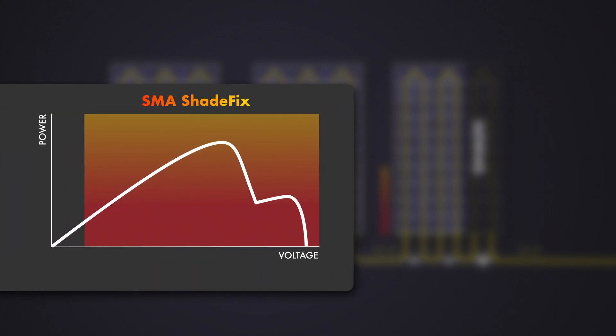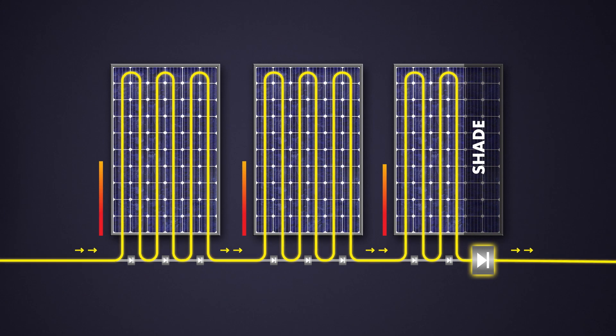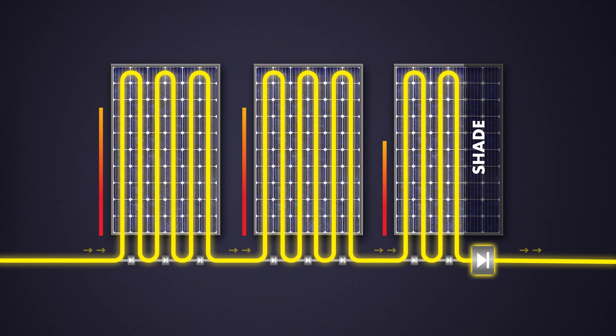Let's see what happens to the partially shaded PV array using SMA ShadeFix. The inverter will recognize the higher global maximum powerpoint at a lower voltage and will set its operating point accordingly. Due to the technical properties of PV modules, this will force the bypass diodes of the shaded PV module into conduction. There's no communication needed. SMA ShadeFix forces the bypass diodes to bypass the shaded PV module. All the PV modules, except the shaded ones, produce full power.